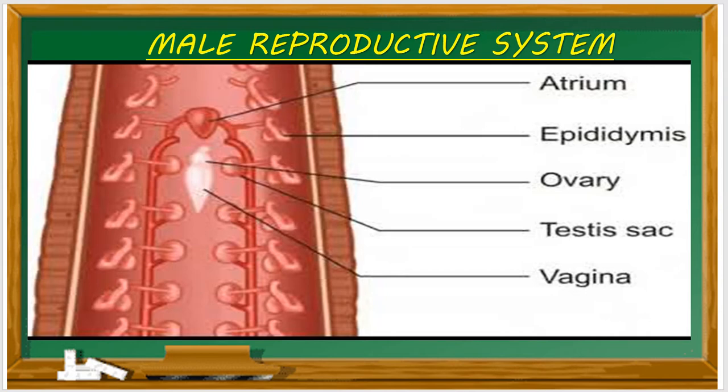Altogether there are 11 pairs of testis. From each testis arises a short duct called vas efferens, which joins with the vas deferens. The vas deferens becomes convoluted coiled tubes to form the epididymis, or the sperm vesicle. This is the place where spermatozoa are stored. The sperm vesicle leads to a short duct called the ejaculatory duct.